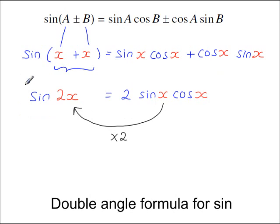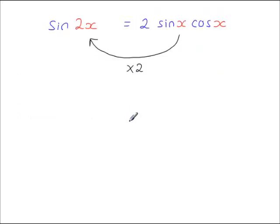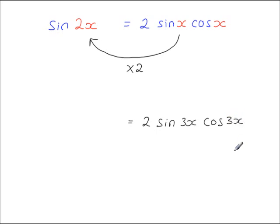This identity needs to be memorised — write it down and memorise it. For example, if you start with 2 sine 3x cos 3x, both angles are the same (3x), so this is a double angle formula. Doubling 3x gives 6x on the left-hand side, so you have sine 6x.